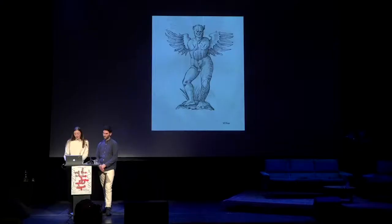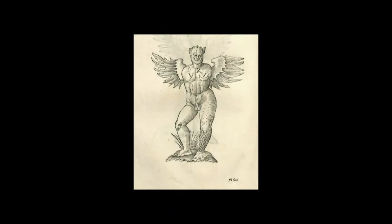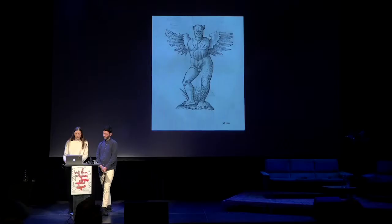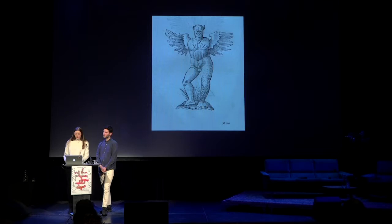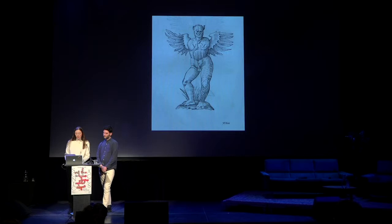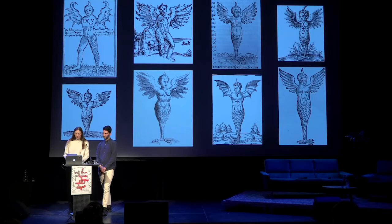The description of a Ravenna monster by a Florentine man in 1512 provides a good example of how such demonstrations were read. He writes: 'It had a horn on its head, straight up like a sword, and instead of arms, it had two wings like a bat's. At the height of the breast, it had a phi on one side and a cross on the other. Lower down at the waist, two serpents, and it was hermaphrodite. On the right knee it had an eye, and its left foot was like an eagle's.' Another chronicler related its deformities to moral failings: the horn indicates pride; the wings, mental frivolity and inconstancy; the lack of arms, the lack of good works; the raptor's foot, rapaciousness, usury, and every sort of avarice; the eye on the knee, attention solely toward earthly things; the double sex, sodomy.